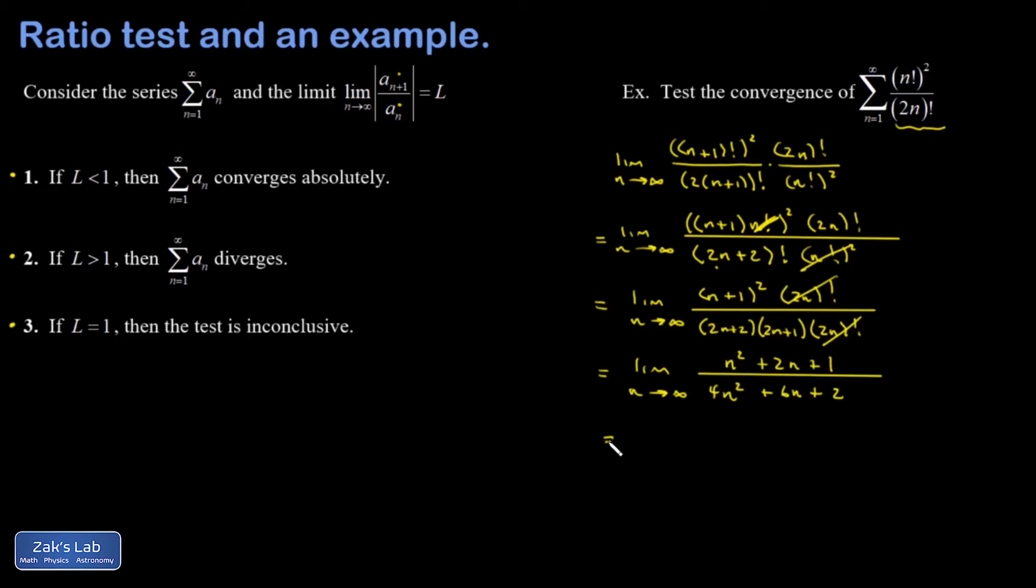I'm going to treat this limit informally this time and say that the highest powers of n are going to dominate the numerator and denominator. That means as n becomes large, this is going to be approximately n² over 4n², which gives 1/4.